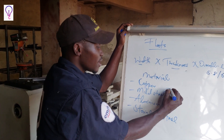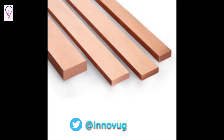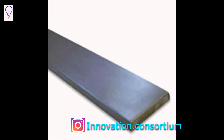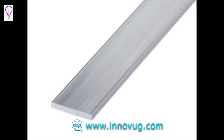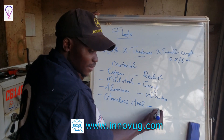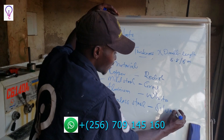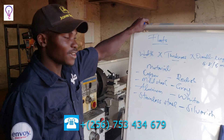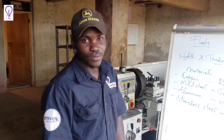Copper is reddish in color. Mild steel is normally gray in color. Aluminum is white in color. Stainless steel is silver in color. That is how you physically differentiate the four common material types of flat bars commonly used in fabrication works.